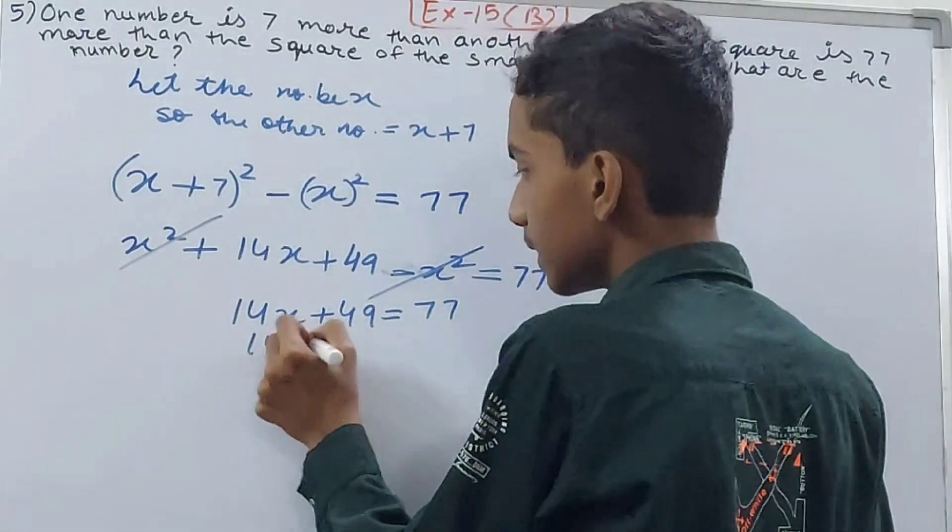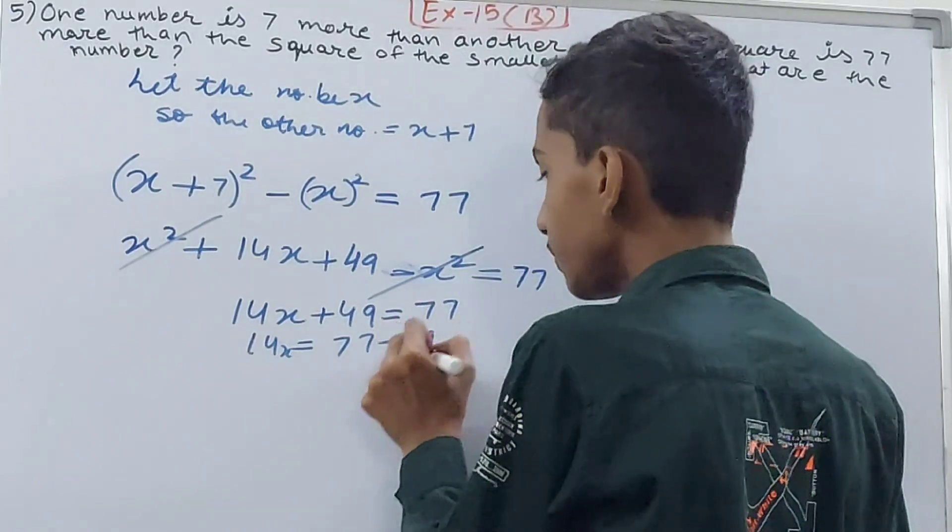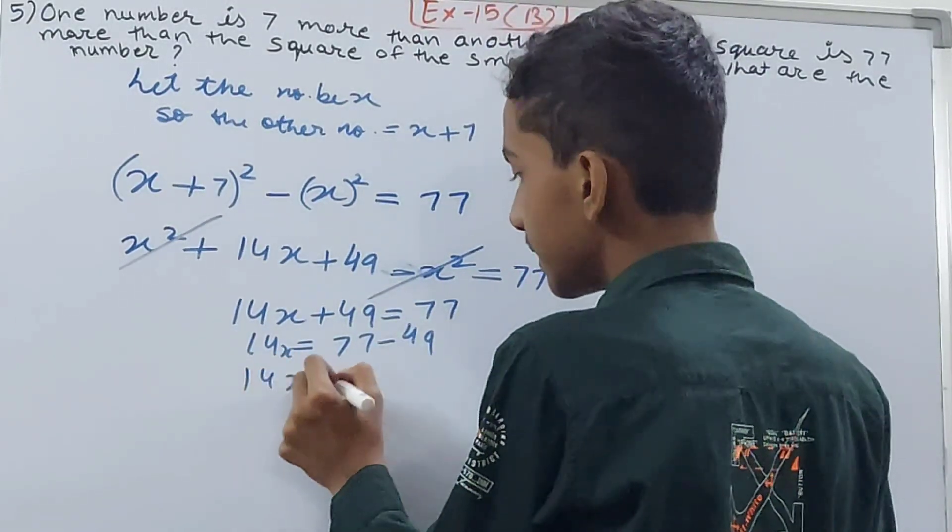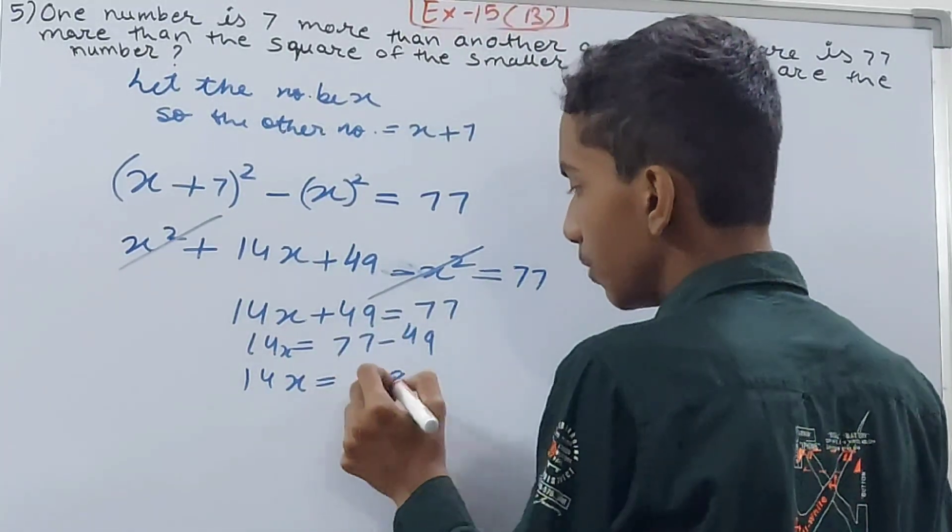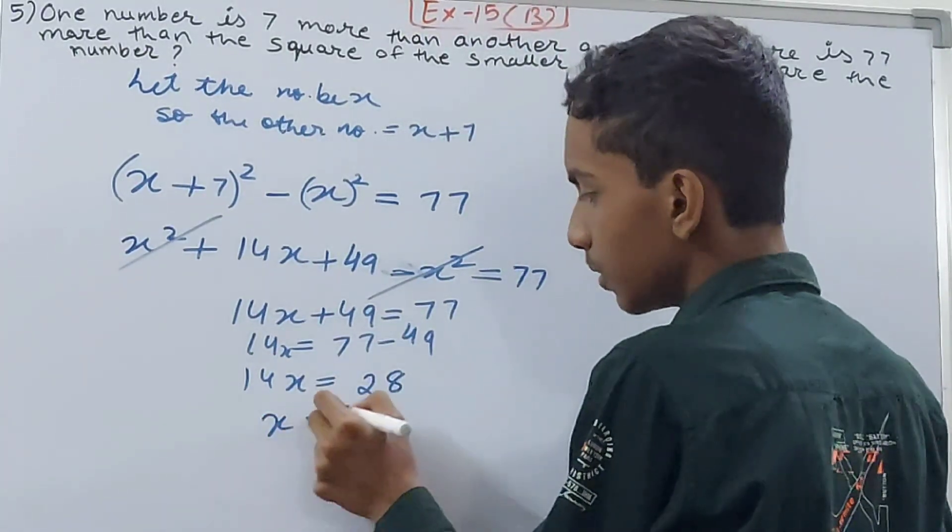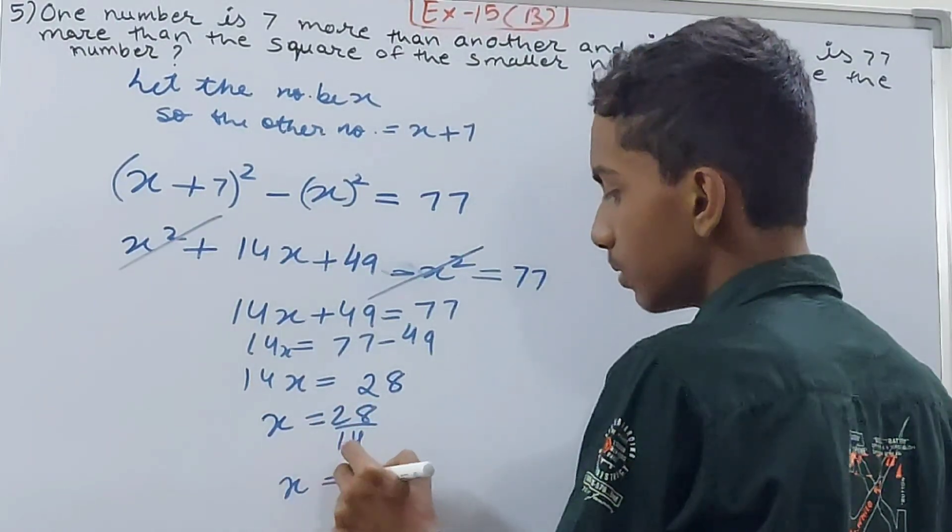14x = 77 - 49, so 14x = 28. Therefore x = 28/14, which gives us x = 2.